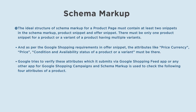The ideal structure of schema markup for a product page must contain at least two snippets: the product snippet and the offer snippet. There must be only one product snippet for a product or a variant. In the offer snippet, attributes like price, currency, price condition, and availability status of the product or variant must be present.